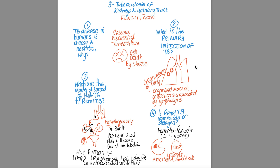Tuberculosis of the kidneys would be an extra-pulmonary TB form. TB can disseminate and it spreads through the blood. These bacilli — the organism which causes TB is called Mycobacterium tuberculosis — it's a bacillus, and these bacilli spread either within the macrophages or they form granulomas.